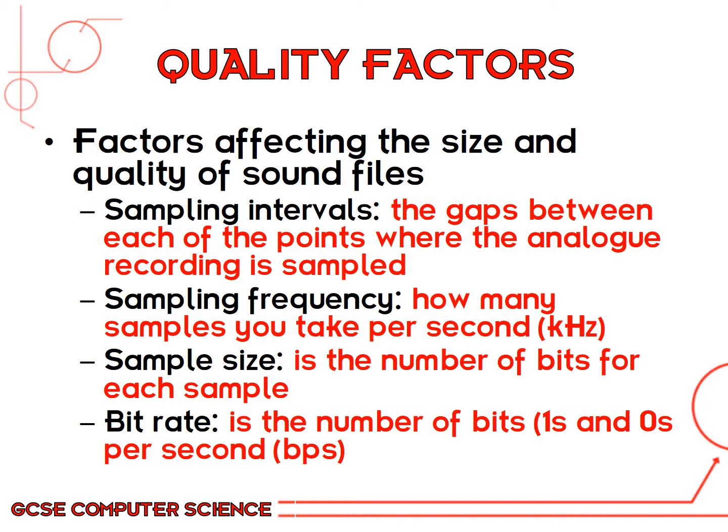There's the age-old argument of whether sound is better on a record player or a CD, and different sound formats like Dolby Digital all have different sound qualities. These can be created by adjusting certain things when converting sound. The factors affecting size and quality are: sampling interval — how long you leave between taking samples; sampling frequency — how many samples you take per second; sample size — the number of bits for each sample; and bit rate — the number of bits per second.